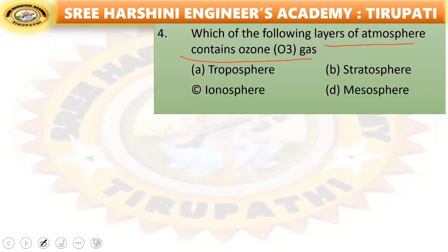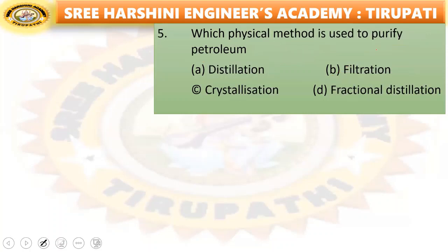Next question: which of the following layers of atmosphere contains ozone gas? The options are troposphere, stratosphere, ionosphere, and mesosphere. The stratosphere layer contains ozone gas. That is the right answer.